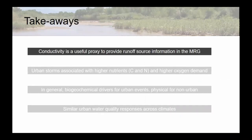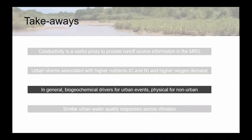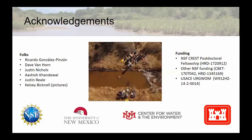Just to briefly summarize: we found conductivity to be a really nice proxy for runoff source, and it can tell us a lot about where storms are coming from in the MRG. We saw higher concentrations of carbon and nitrogen as well as higher demand associated with our urban storms. In general, urban storms appear to be more driven by biogeochemical parameters, while physical parameters link more to our non-urban events. We see generally similar responses in water quality to stormwater runoff in urban areas across a gradient of climate. Thanks to folks involved and the funding sources that made it possible.